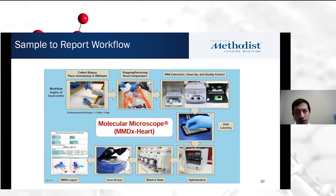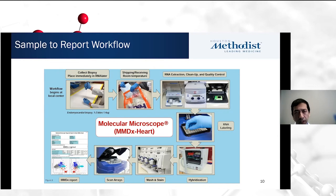When a sample is collected, it is placed immediately in RNA later, then shipped. The RNA is extracted, cleaned up, and quality controlled. The RNA is then labeled for hybridization and sent to scan arrays. Eventually the MMDX report is produced, analyzed by a pathologist and signed off. Because this is done at very few standardized sites, there is reasonable homogeneity and less heterogeneity in the processing of tissues.